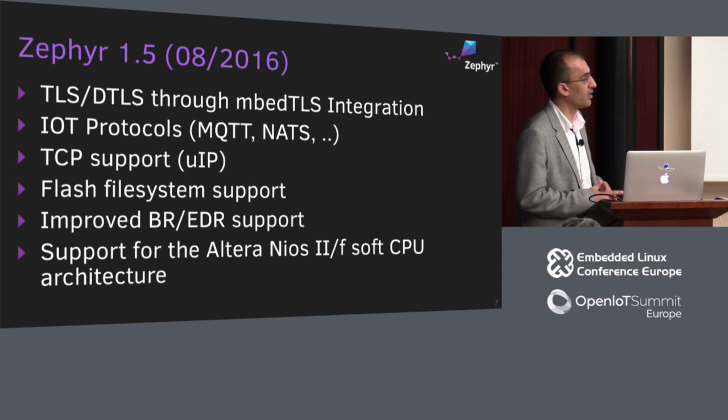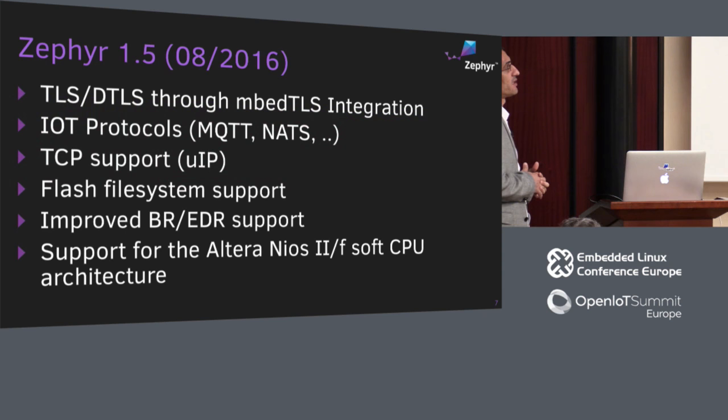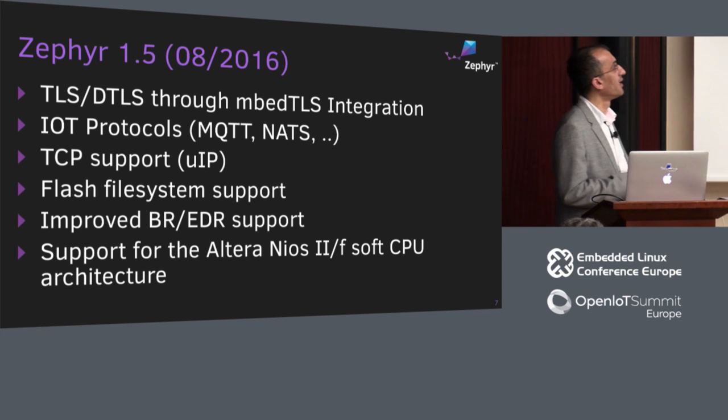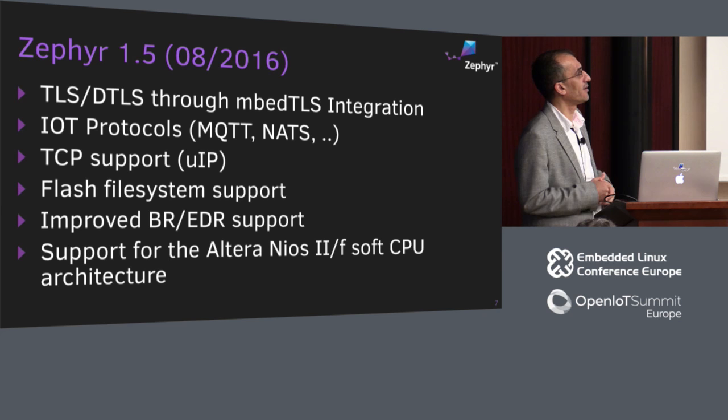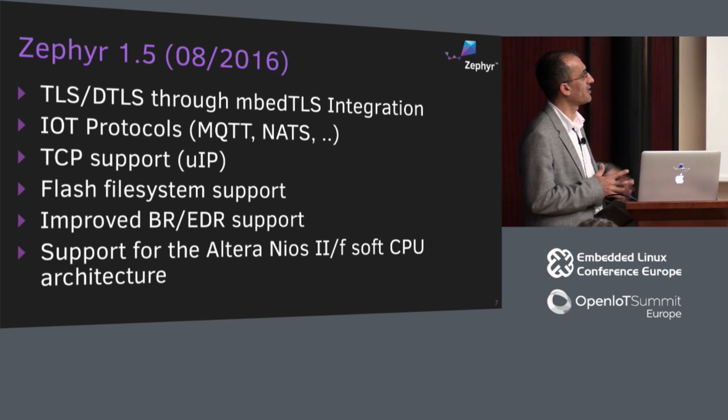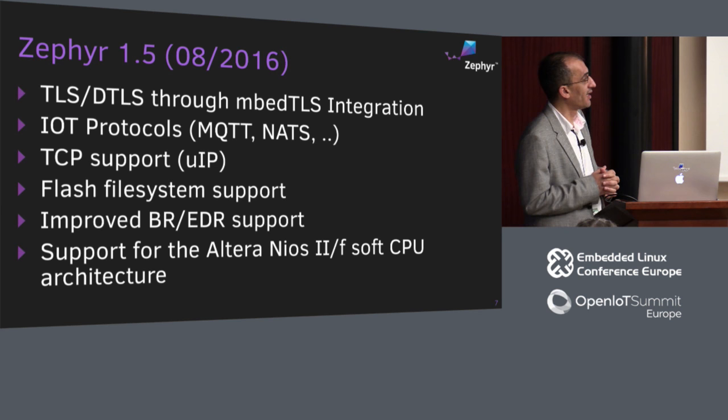In Zephyr 1.5, we introduced support for TLS and DTLS through integration of mbedTLS. We started adding IoT protocols: MQTT, NATS, HTTP, and so on. We also added TCP support, file system support, and a lot of activity on the Bluetooth front. And we added a new architecture, the Altera NIOS. This all happened in summertime so there are no major features — those are being kept for 1.6.